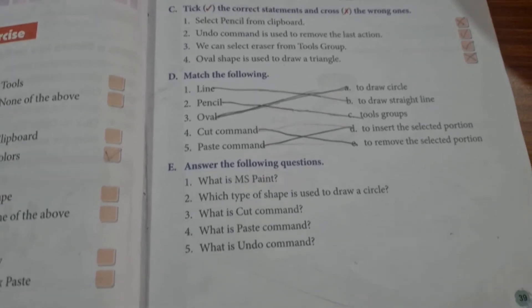Oval — to draw a circle. Cut command — to remove the selected portion. Paste command — to insert the selected portion.